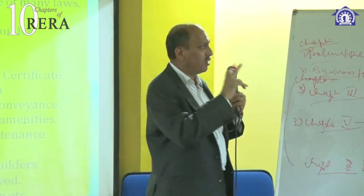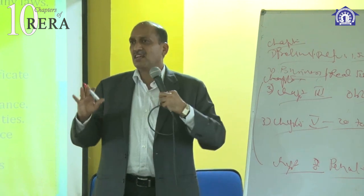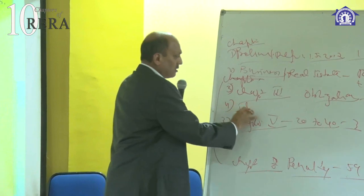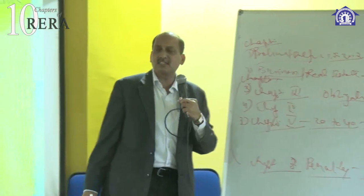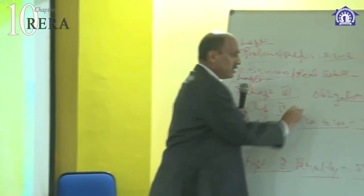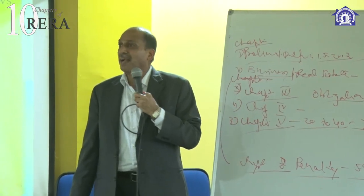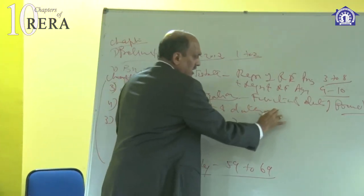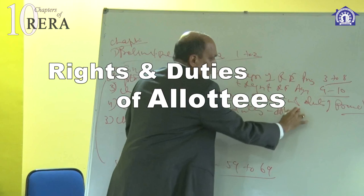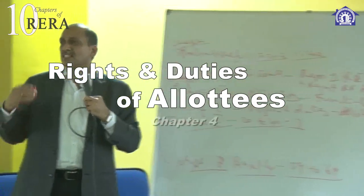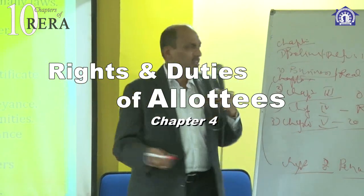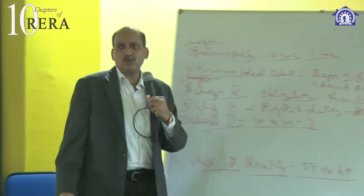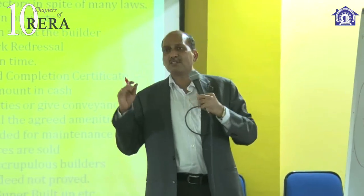People are more worried about sections 3 to 8 and 11 to 18. These are the two most important chapters. The next chapter — chapter number four — is related to rights and duties of allottees. There is only one section covering this: section 19, which talks about the rights and duties of allottees.